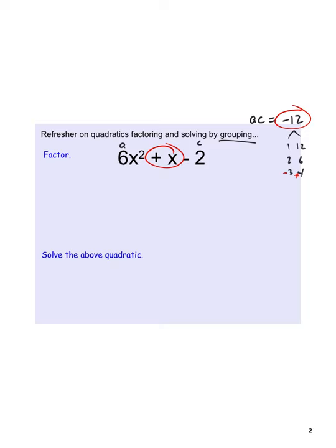With grouping, we're rewriting this equation. I'm going to write it as plus 4 and then plus negative 3x. One thing that's easier is when we group, we're putting parentheses around terms but we aren't actually subtracting a negative 2. We're just writing minus 3 as plus negative 3 — not distributing out a negative 1.